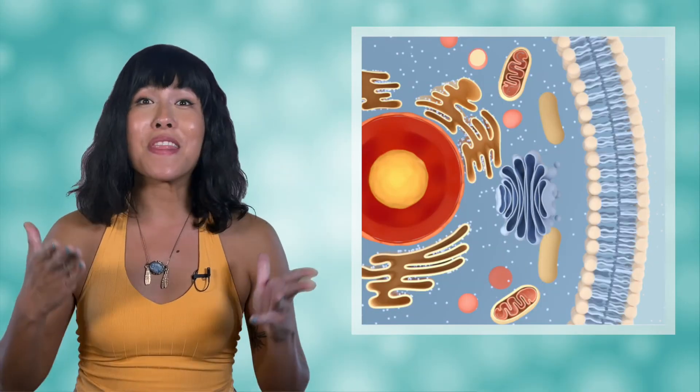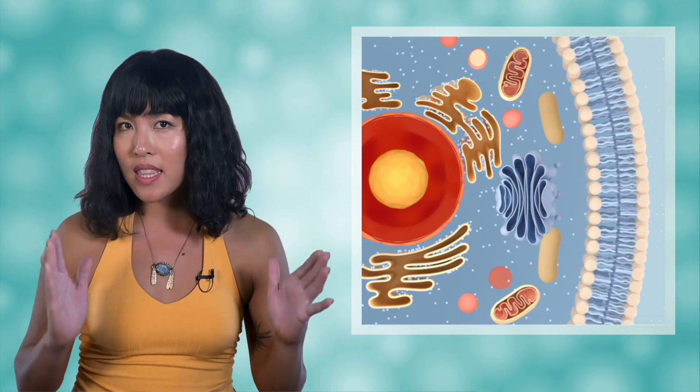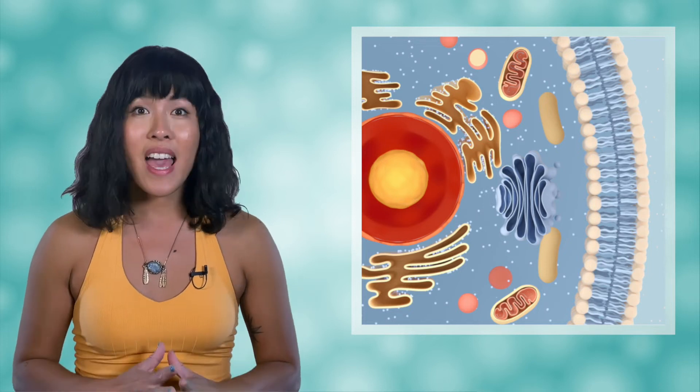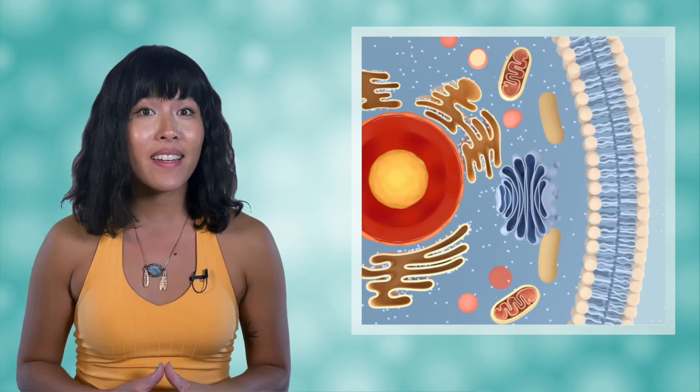We said in the beginning of this lesson that the chemical structure is what allows the membrane to be selectively permeable. And now that you know which parts are polar and nonpolar, we should be able to explain why that is.